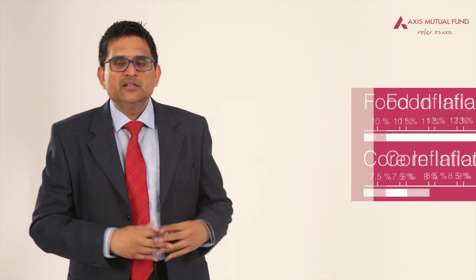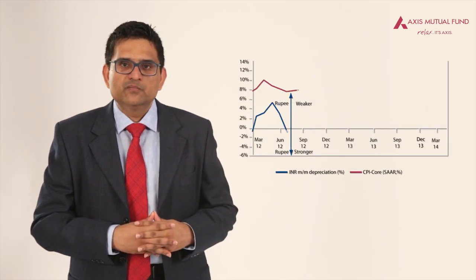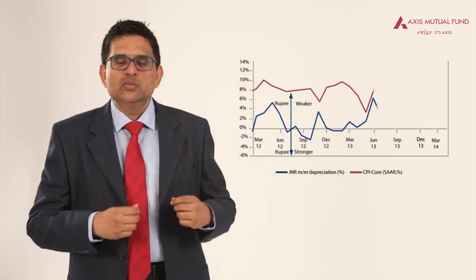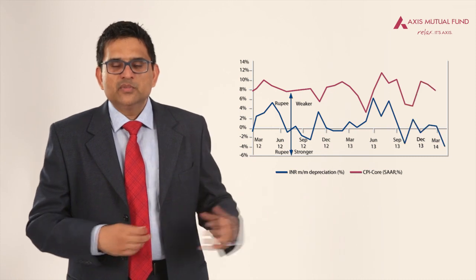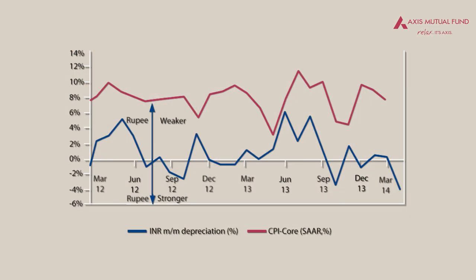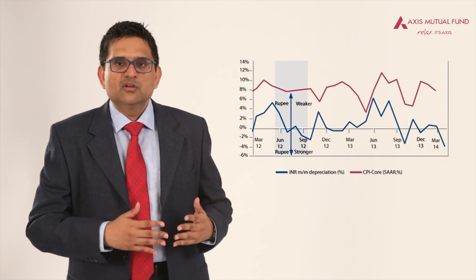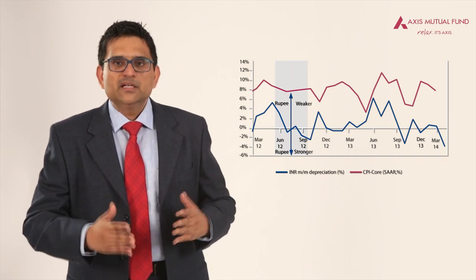Indeed, if you look at the monthly changes in Co-Inflation, they are highly correlated with the movements in the currency. For example, last year between July and September, we saw a substantial depreciation of the currency followed by a strengthening of the currency.